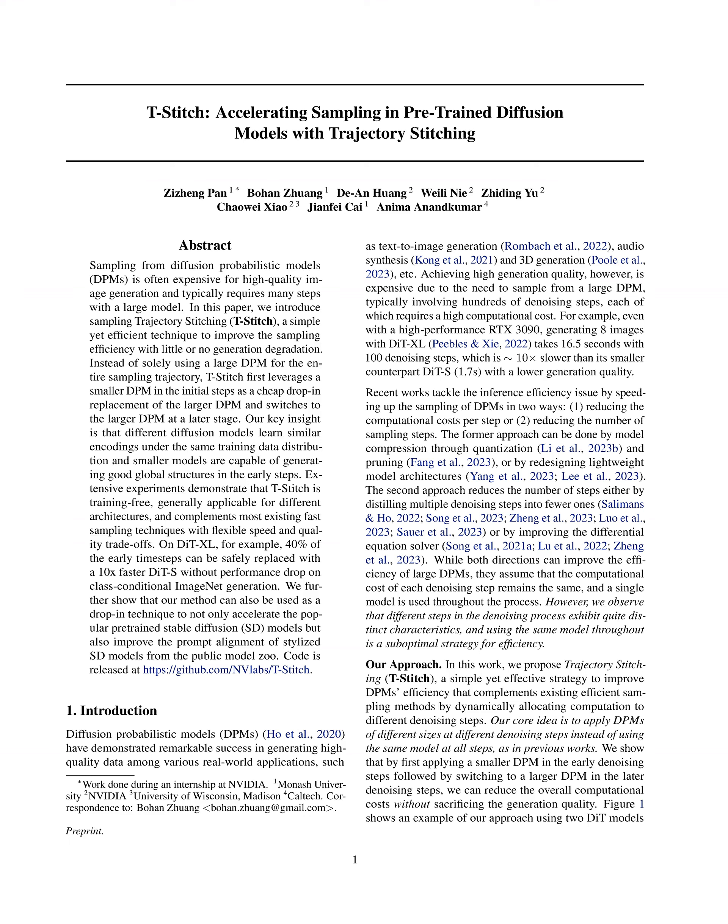In this paper, we introduce the concept of trajectory stitching, T-Stitch, a novel method designed to enhance the sampling speed of diffusion models by utilizing pre-trained small models at the onset of the sampling trajectory. This technique is grounded in the principle of leveraging the efficiency of smaller models to kickstart the sampling process, thereby accelerating the overall operation of diffusion models.